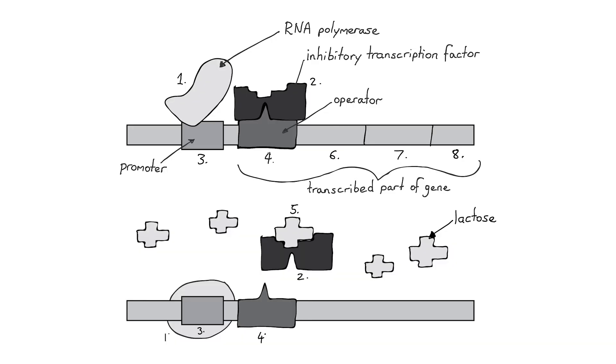This has now left the promoter region free for RNA polymerase to bind, and it can successfully transcribe those lac genes. Therefore, the enzymes needed for breaking down lactose and utilizing it will be translated and used by the E. coli.